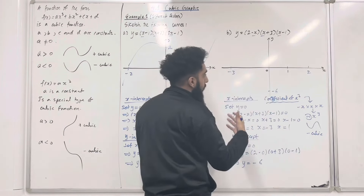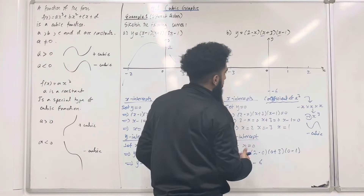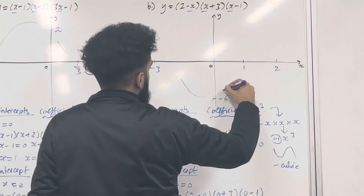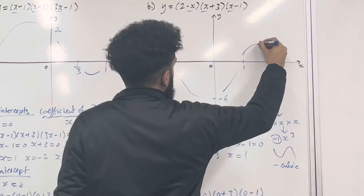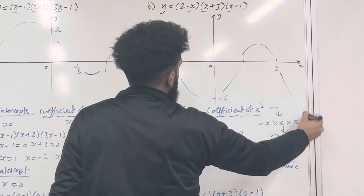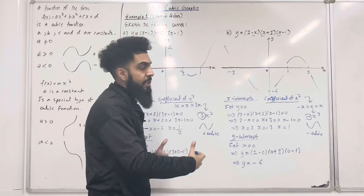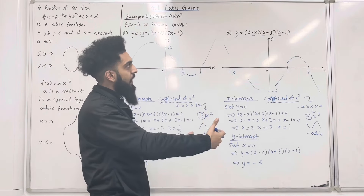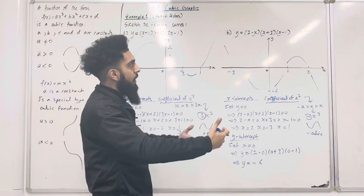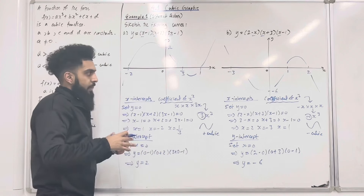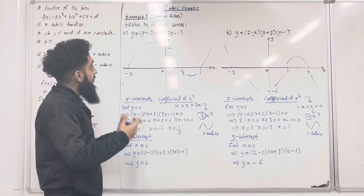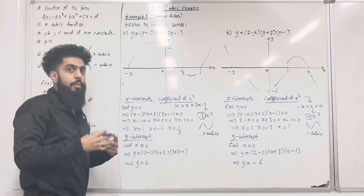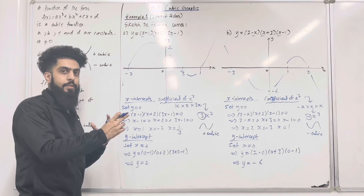So I'm going to sketch the curve as a negative cubic. Here's my negative cubic: y equal (2 minus x)(x plus 3)(x minus 1). That completes example 1 on sketching cubic curves with different factors.